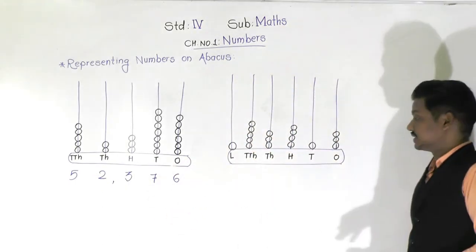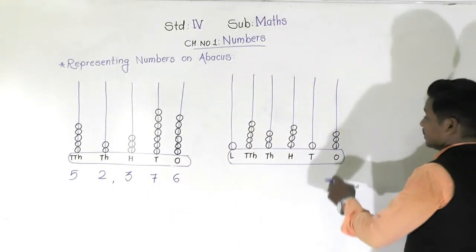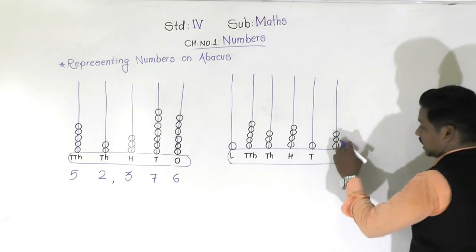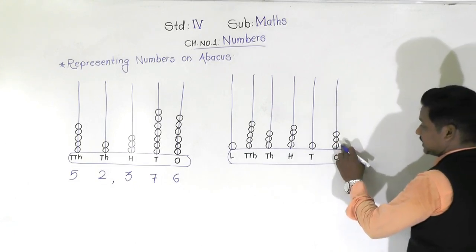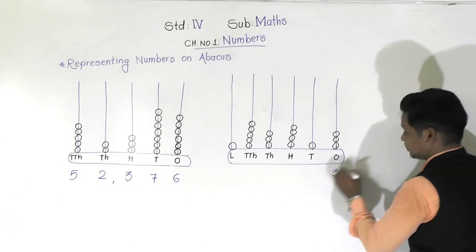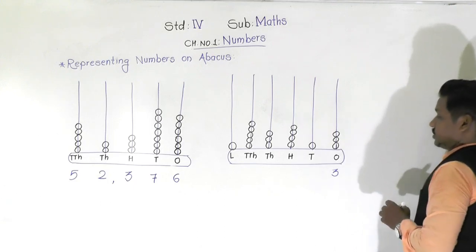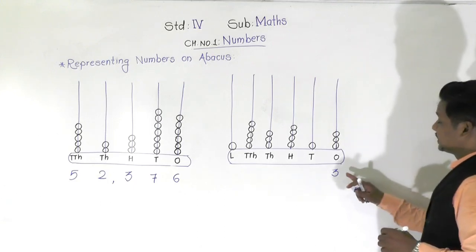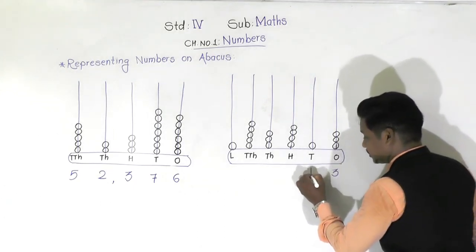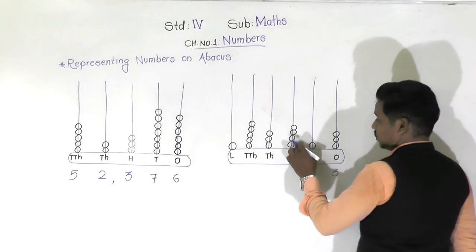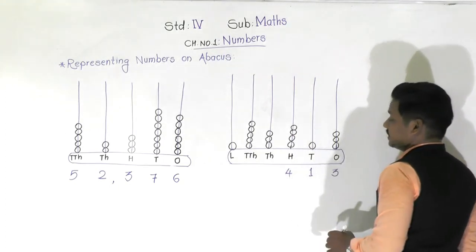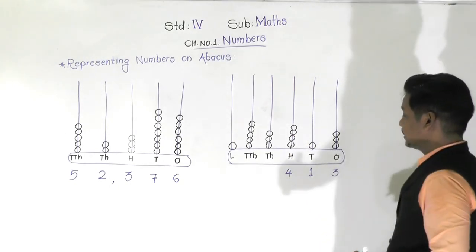Let's go towards the next abacus. In the spike of ones place, how many beads are there? One, two, and three - three beads, so it represents the digit 3. Here there is one bead, so it represents the digit 1. In the next spike: one, two, three, four - so it represents the digit 4.